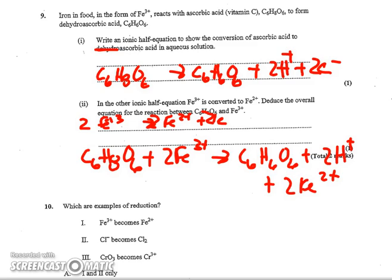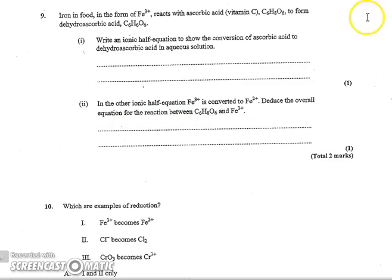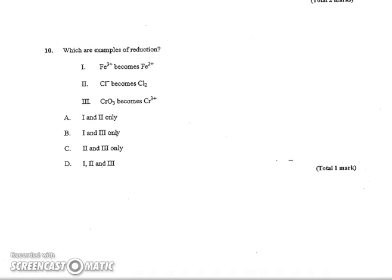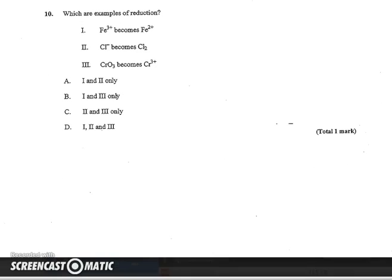Number 10 wants to know which are examples of reduction. So if you take a look at Fe3+ becomes Fe2+, that is reduction because the charge goes down. Cl- becomes Cl2, that means it goes from minus 1 to 0, so that is not a reduction. And then the CrO3 you have to take a look at. You've got 3 times minus 2 is a minus 6, so Cr is a plus 6 to Cr+3. That would also be a reduction. So B, 1 and 3 would be the correct choice.